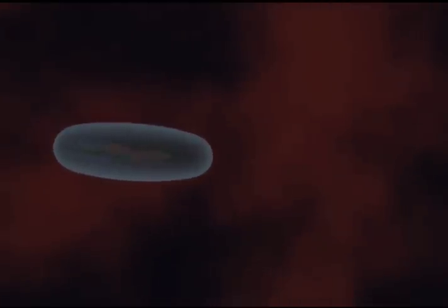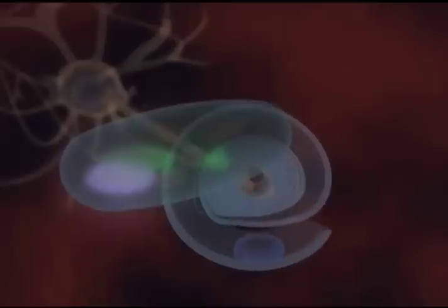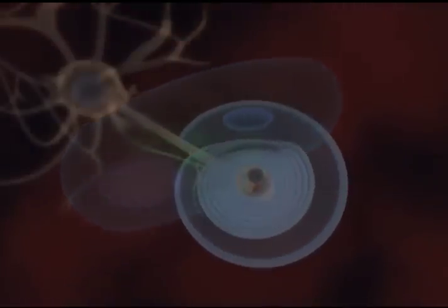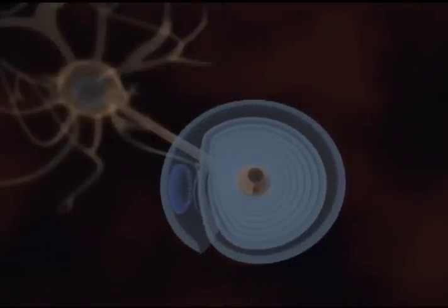The Schwann cell contains the typical cell organelles and cell membrane structure. However, notice as the Schwann cell surrounds the axon that the nucleus and other organelles are squeezed to the outside wrapping of the cell.